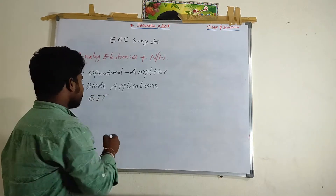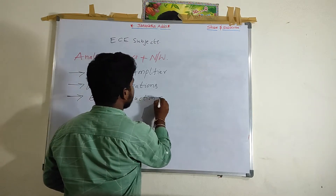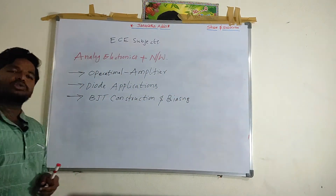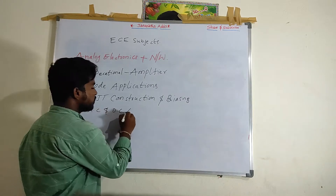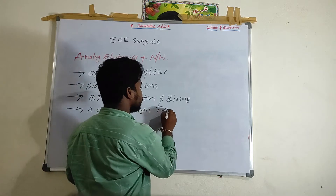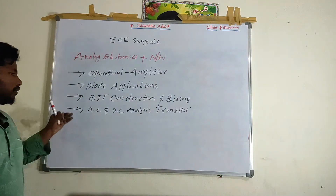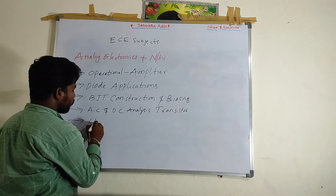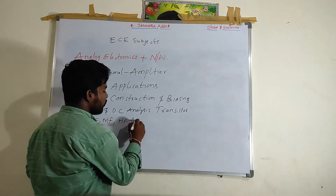We will go into BJT construction in detail and its biasing. We will also cover the AC and DC analysis of transistors — whether bipolar or unipolar. We will discuss AC and DC analysis, as well as low frequency, mid frequency, and high frequency amplifiers.